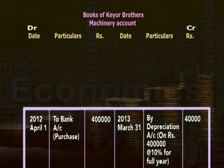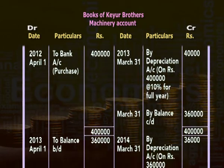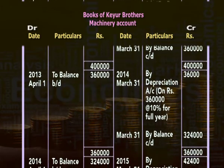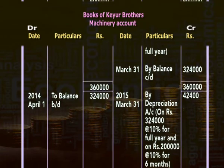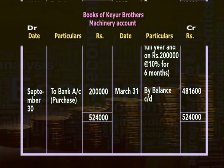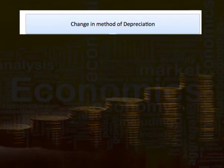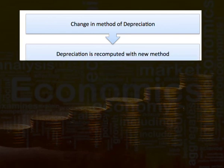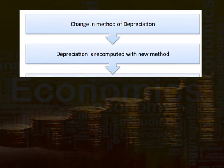A question may arise: whether a change in method of providing depreciation is allowed or not. Changes in depreciation method can be justified only if the change is done to comply with certain conditions like compliance of statute, compliance of accounting standards, or better and appropriate presentation of financial statements. In case of a change in method, depreciation should be recomputed using the new method from the date of use, acquisition, or installation till the date of change in method.